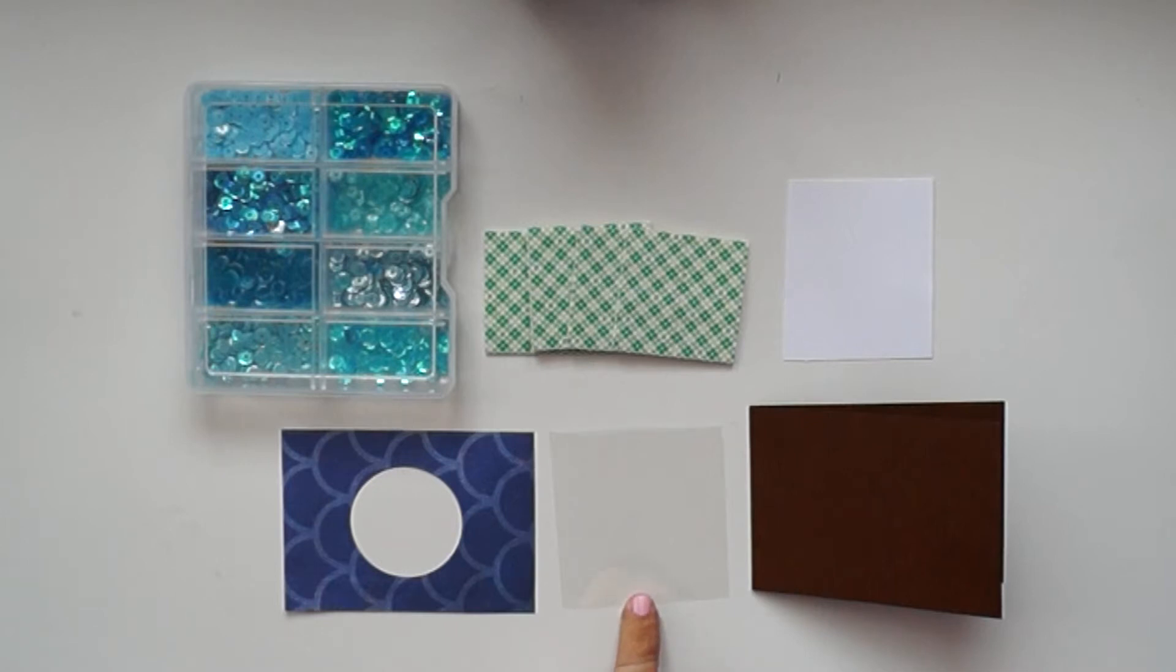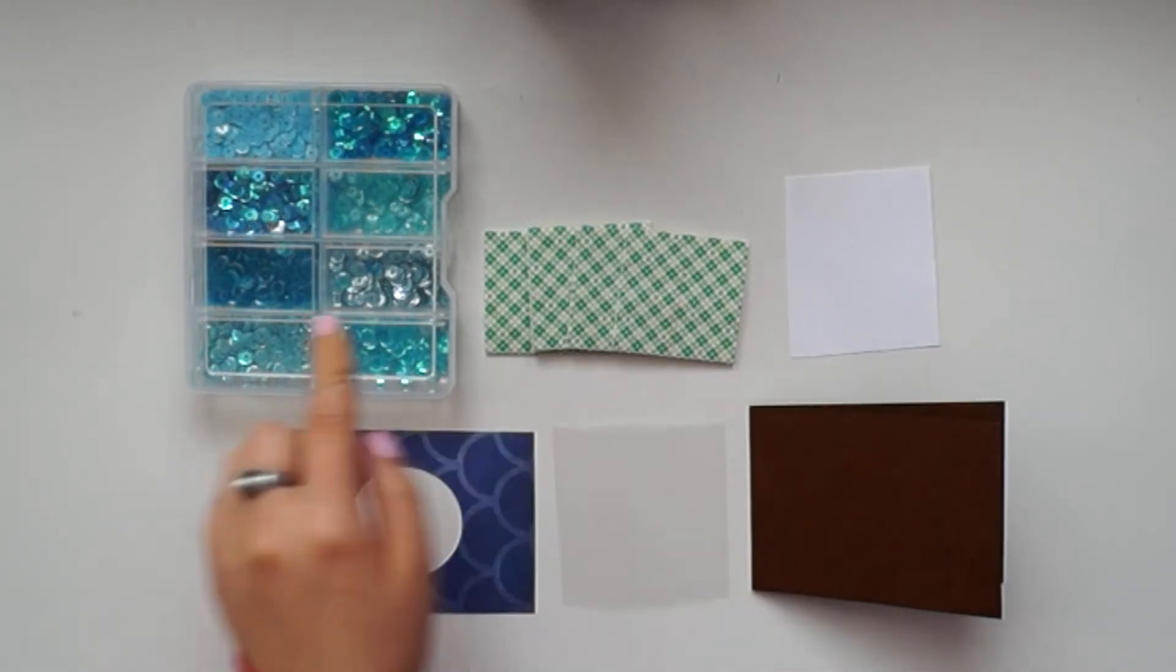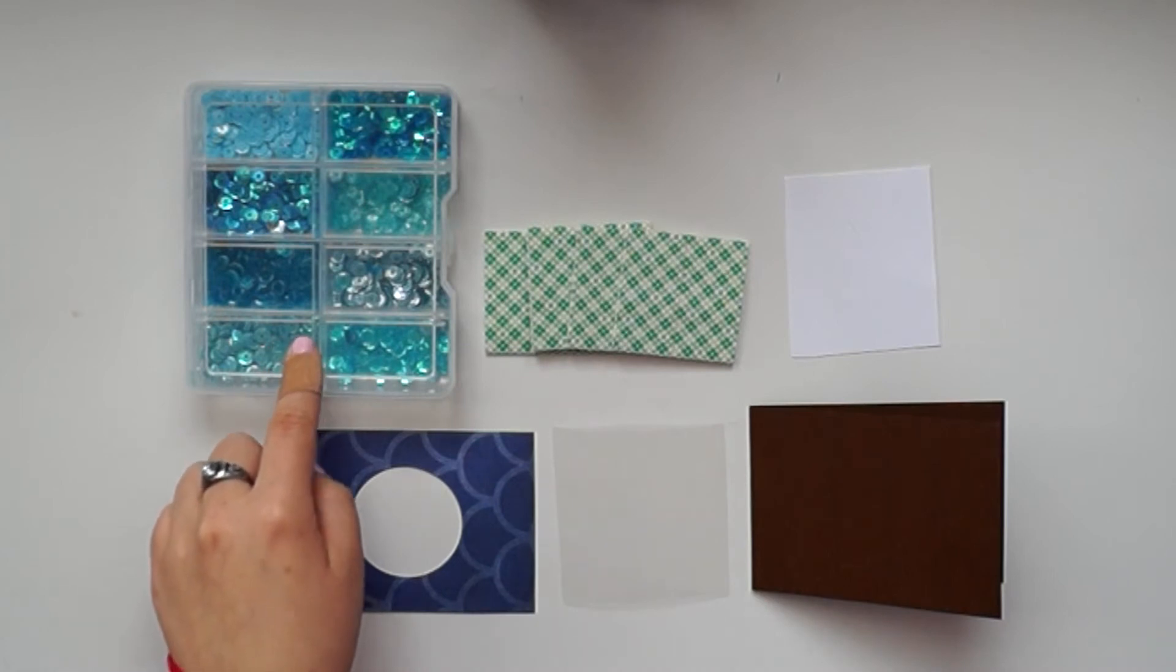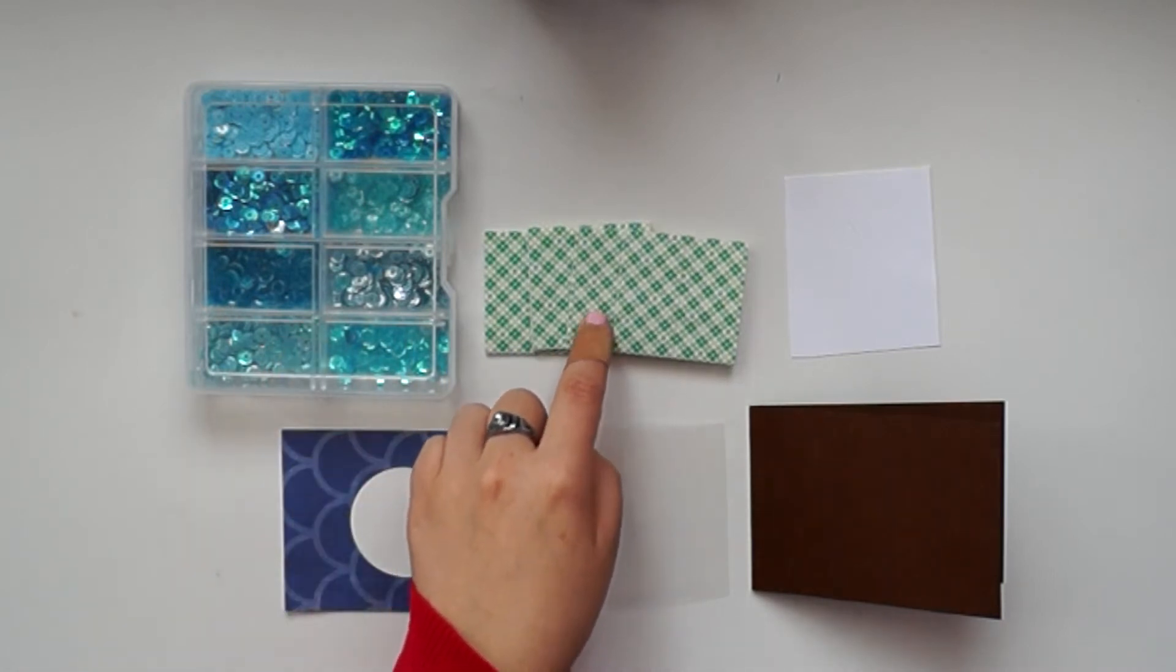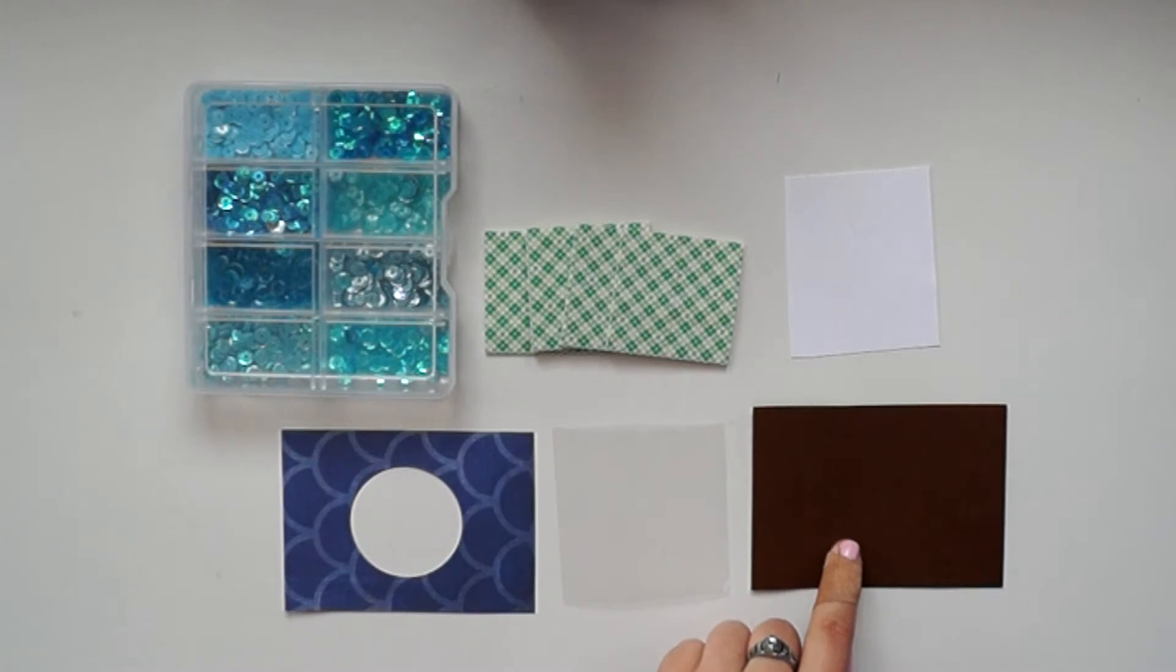You need acetate or clear film, the backing for your shaker card, the sequins that are going to shake inside, foam adhesive, as well as the cardstock that makes the foundation of your card.